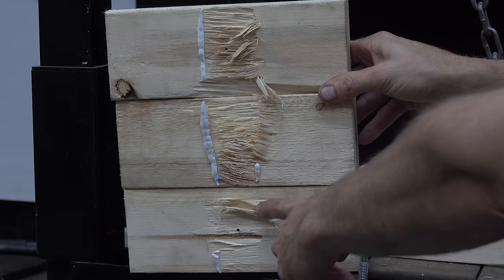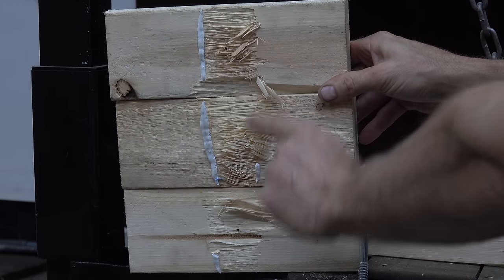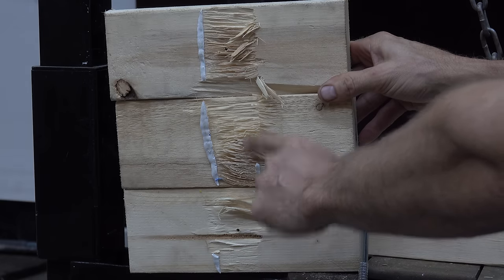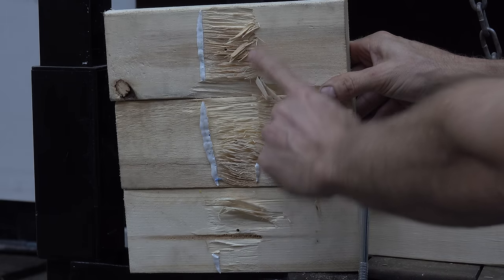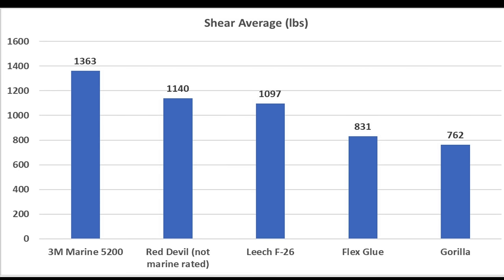With 3M, obviously, the wood failed three out of three times. So 3M is definitely by far the strongest product. No matter what the numbers show, 3M is actually destroying the board because it is sticking just that well. The results of the shear strength test are very interesting with 3M marine adhesive dominating the showdown by averaging 1,363 pounds, which is over 200 pounds more than Red Devil. F-26 did a very respectable job at nearly 1,100 pounds. Flex finished in 4th, Gorilla in 5th at 762 pounds.